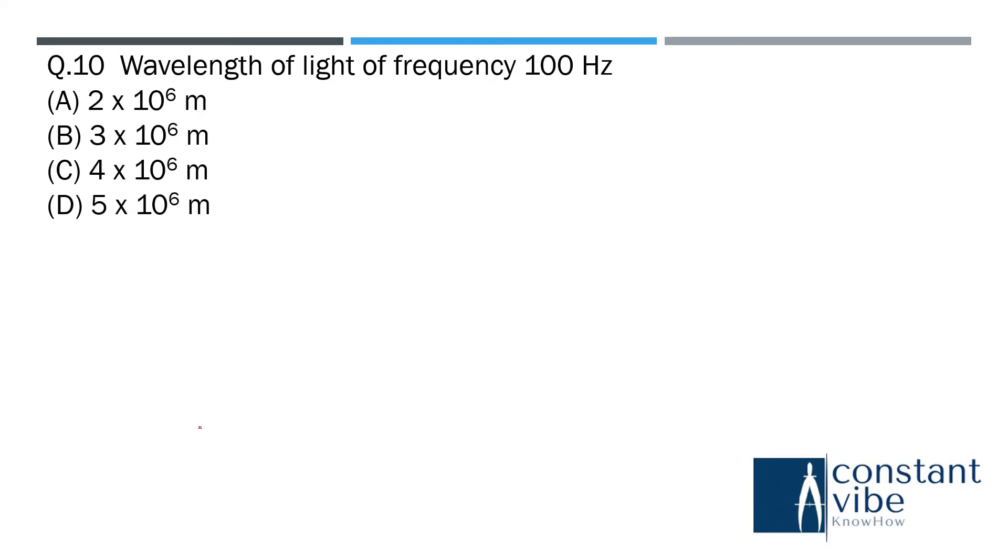Next is question number 10. Wavelength of light of frequency 100 Hz. What is the wavelength? See here, this is very simple question. Lambda is equal to c by v. So it is 3 into 10 to the power 6 meter. So that's it.